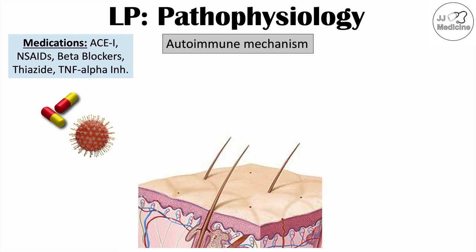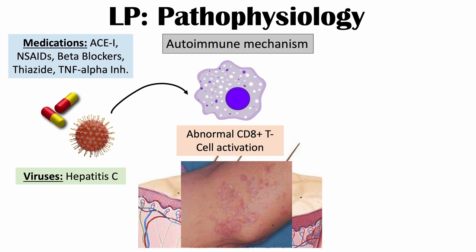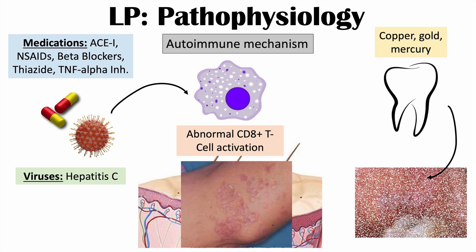A particular virus associated with this condition is hepatitis C. Individuals with hepatitis C are five to six times more likely to have lichen planus, suggesting an important pathophysiological association. Exposure to these triggers leads to abnormal CD8 T cell activation, causing lesions. Another possible mechanism for oral lichen planus is contact with metals from cavity fillings — such as copper, gold, or mercury — leading to a contact reaction inside the mouth.